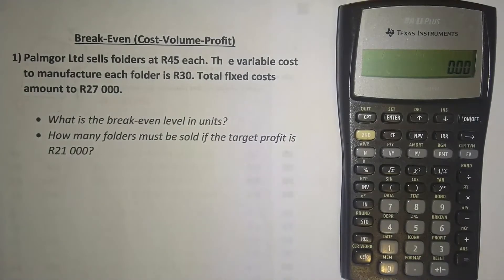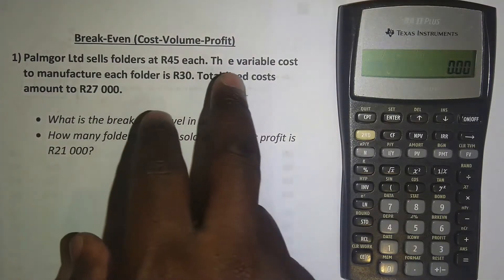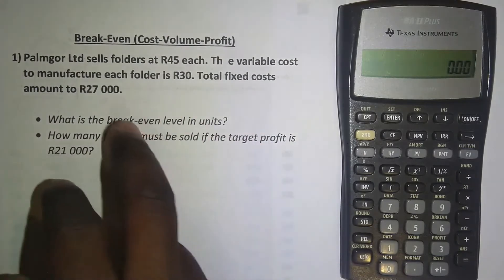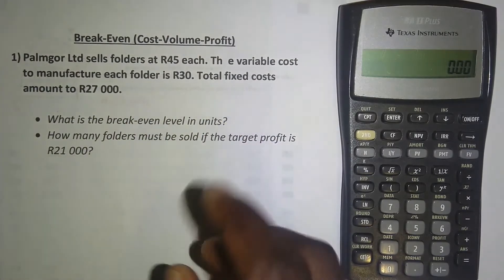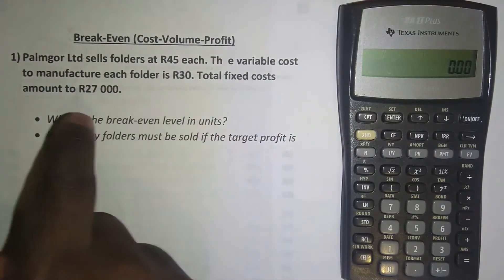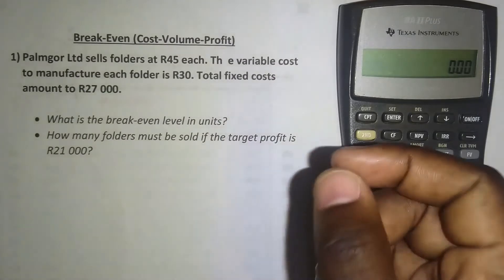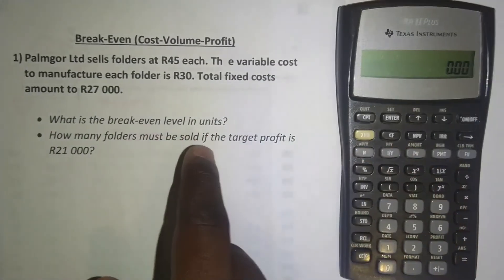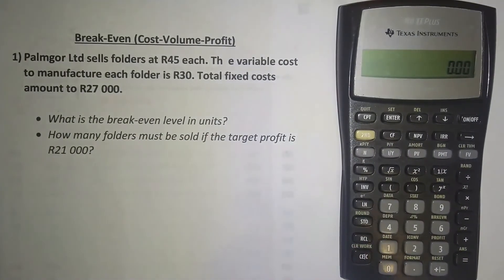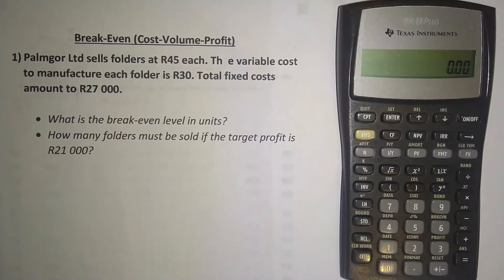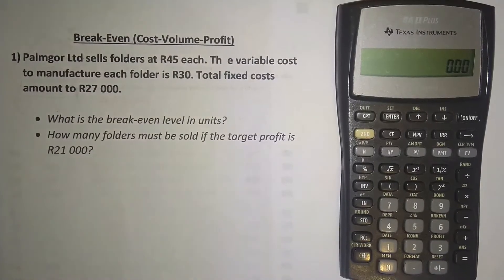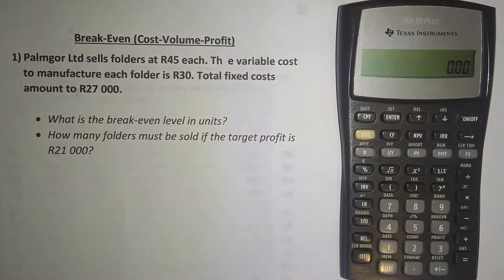The problem states: Pam Go Limited sells folders at 45 rand each. The variable cost to manufacture each folder is 30 rand. Total fixed costs amount to 27,000 rand. The first question asks: what is the break-even level in units? The second question asks: how many folders must be sold if the target profit is 21,000 rand?